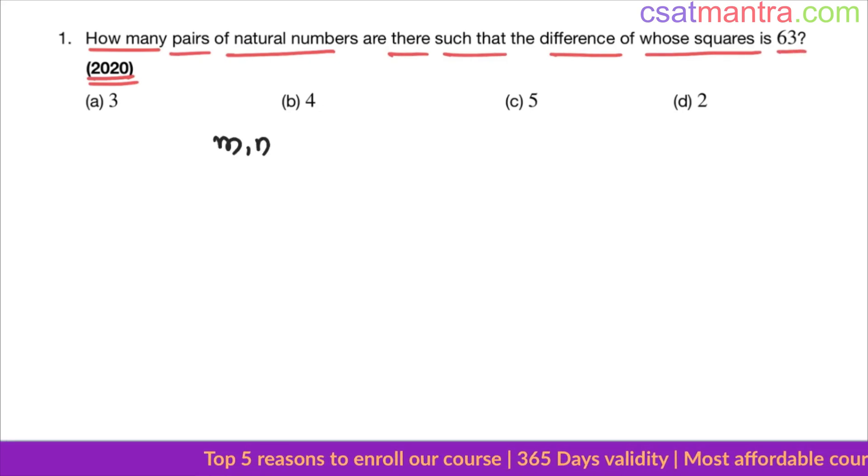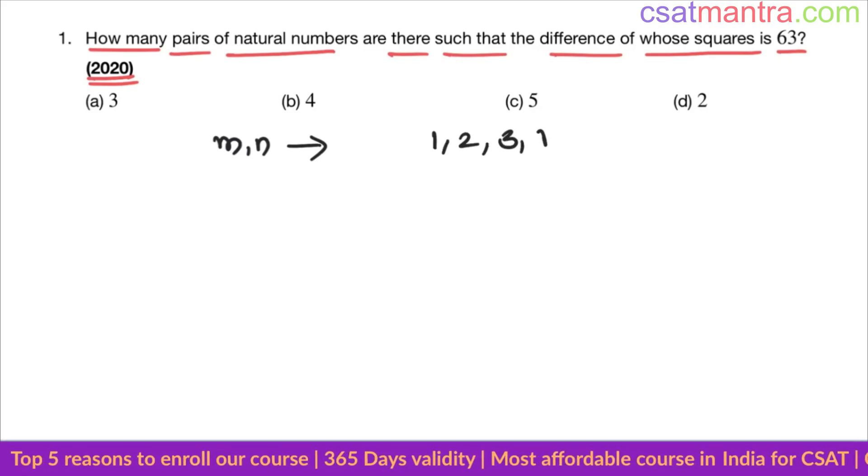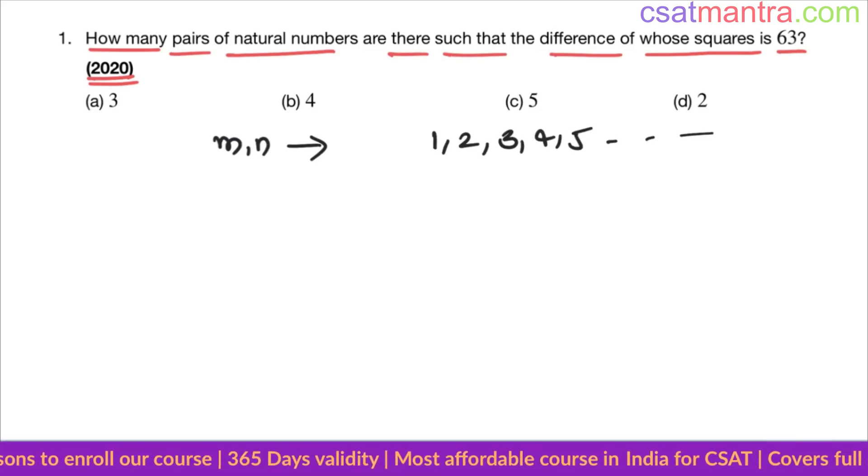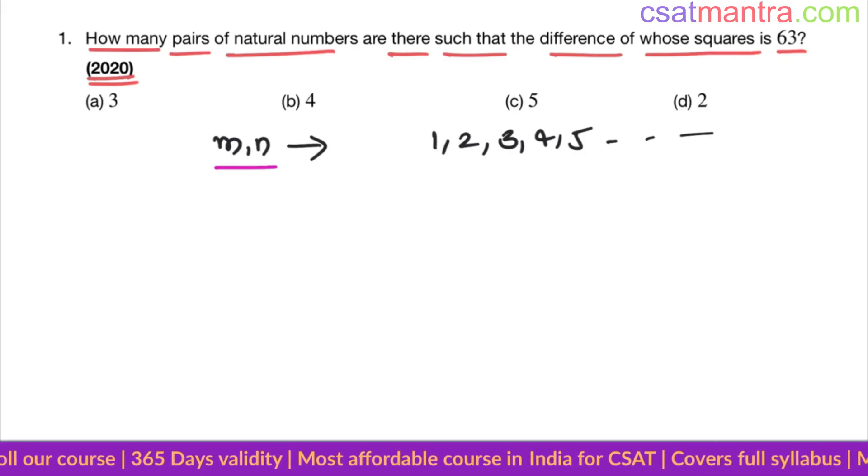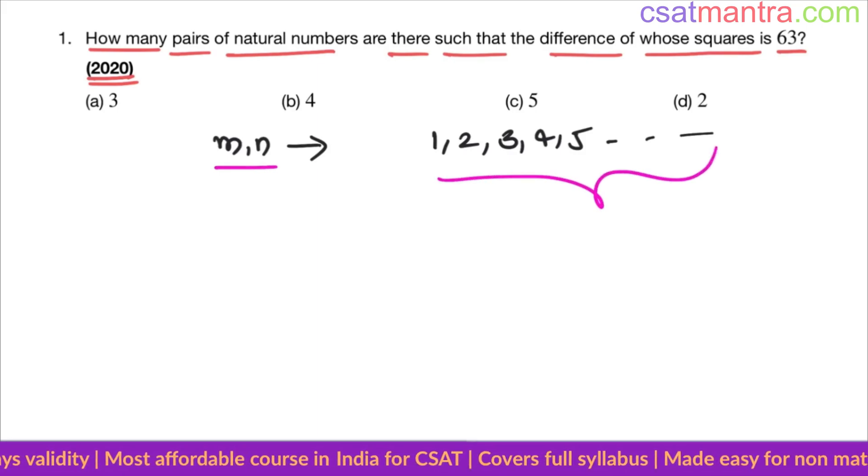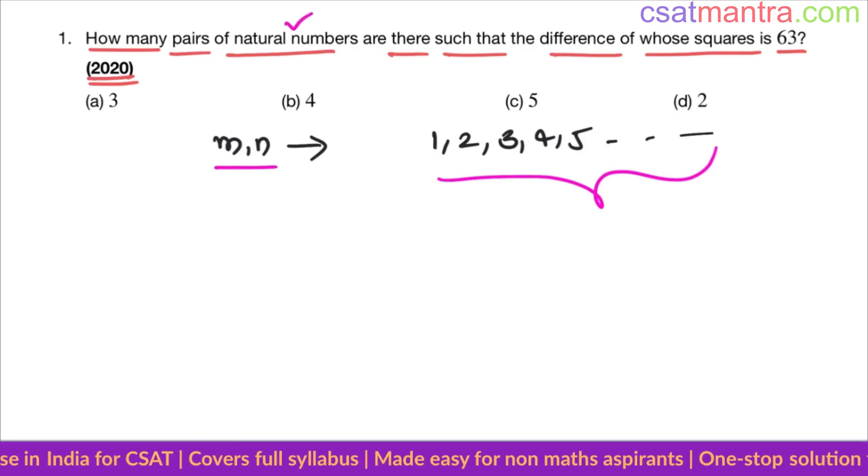Let's say we have a pair m, n and they are natural numbers, positive integers. When we are finding m and n, if any one of them or both are not natural numbers, that's not our answer, that's not our pair. We want natural numbers, clear?